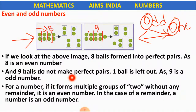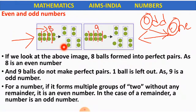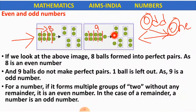For a number, if it forms multiple groups of 2 without any remainder — remainder means the number which is remaining — then it is an even number, like 8. 8 is an even number because it formed groups of 2 without any remainder. In the case of a remainder, the number is an odd number. Here a ball is remaining, so this will be our remainder. Therefore this will be an odd number. 8 is an even number. 9 is an odd number.